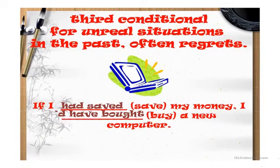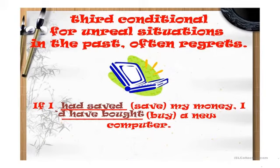Here we have another example: 'If I had saved my money, I'd have bought a new computer.' 'If I had saved' — this is past perfect, verb three. The other part is 'would have' with verb three. Why is it imaginary in the past? 'If I had saved' means I didn't save my money. 'I'd have bought' means I didn't buy and I can't buy a new computer because I didn't save money.